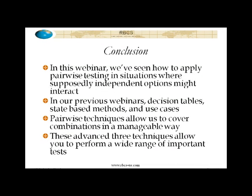Very straightforward. Now of course with the Paralyze tool it's even more straightforward than that. You basically just download the tool, follow the directions on how to use it, map the factors and options, and it's going to automatically generate that Paralyze table for you — and you just go through and cover them with tests.